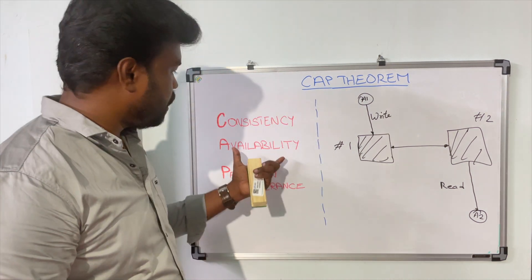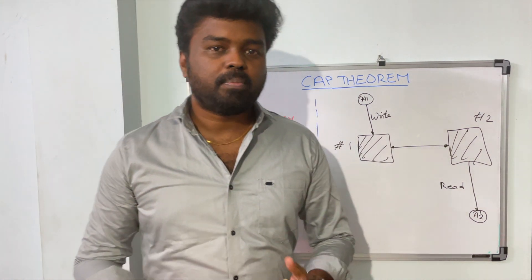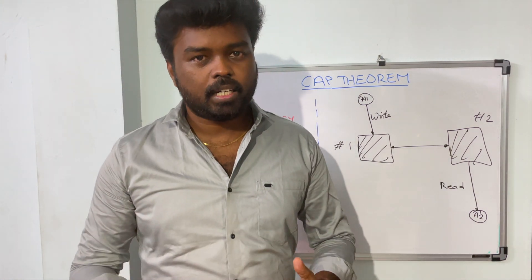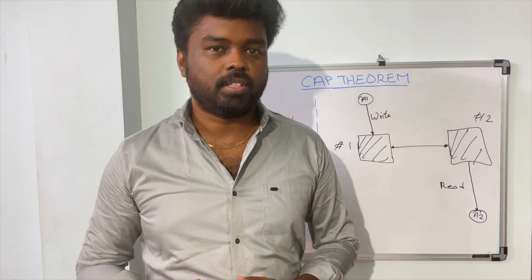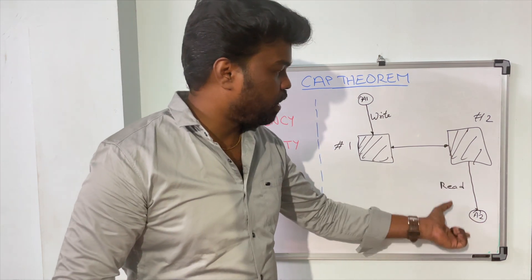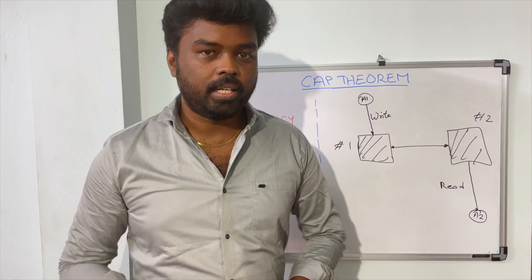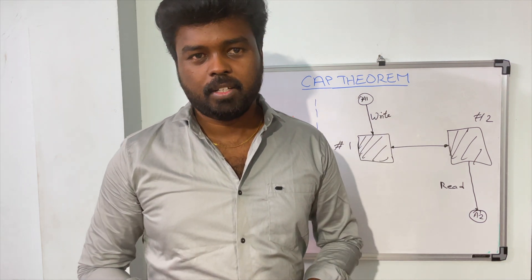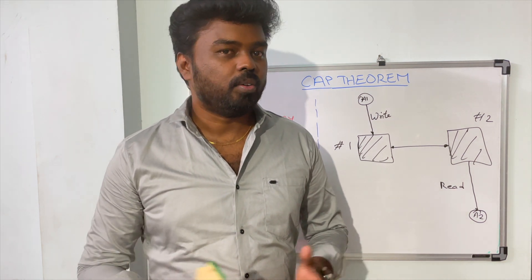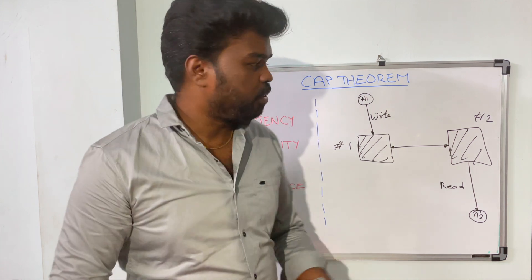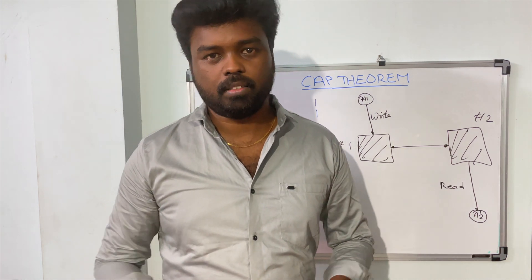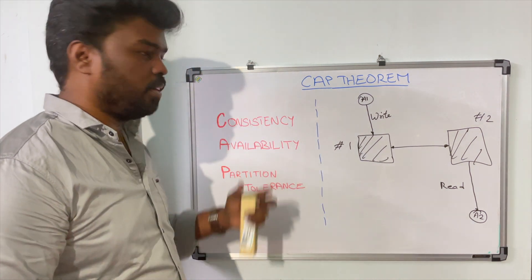The next attribute is availability, which means whenever an application is requesting any node for data, that node should always respond with a successful response. Whenever we request data from any node, it should always give the data — it should never refuse the connection, it should never say it won't serve the data. It should always be available to serve the data to the application instances. That's what we call high availability.